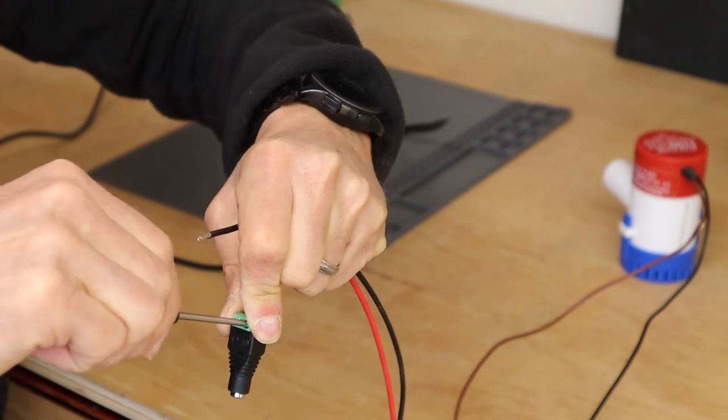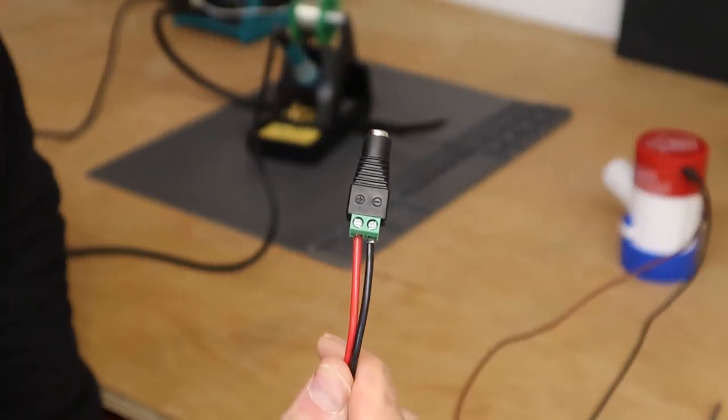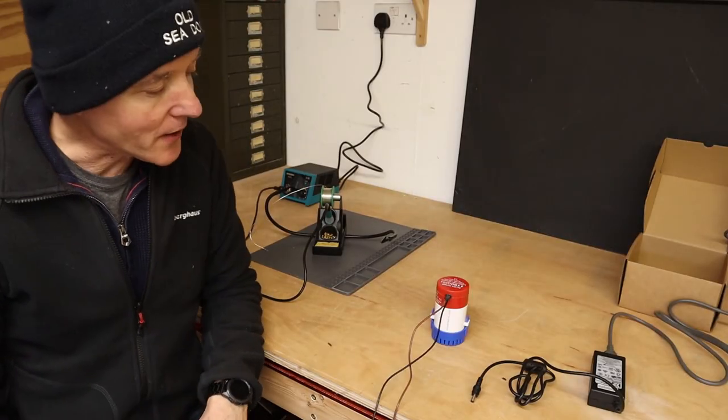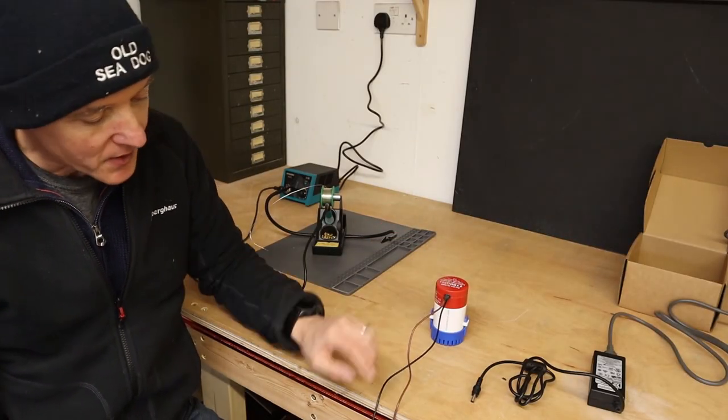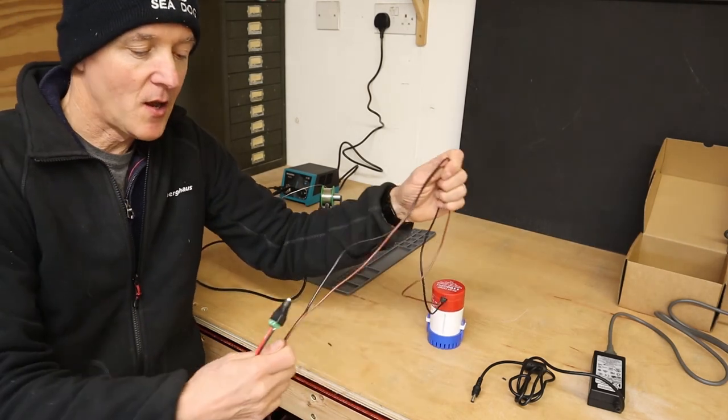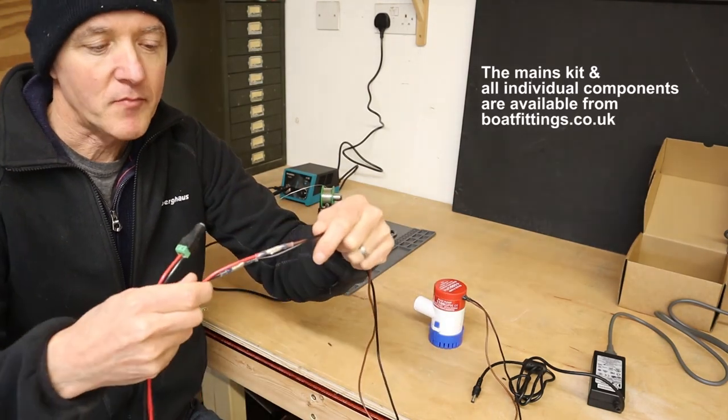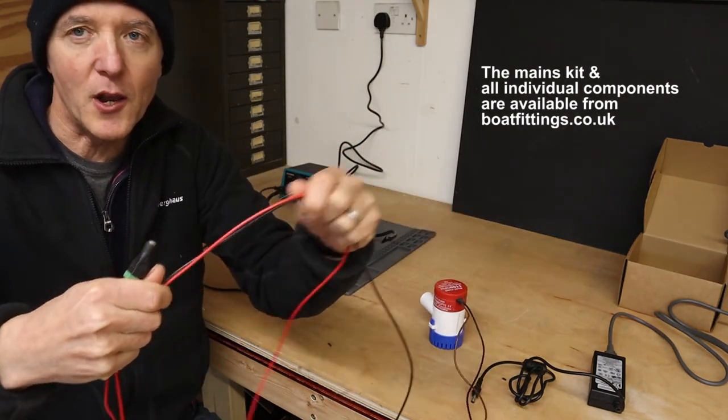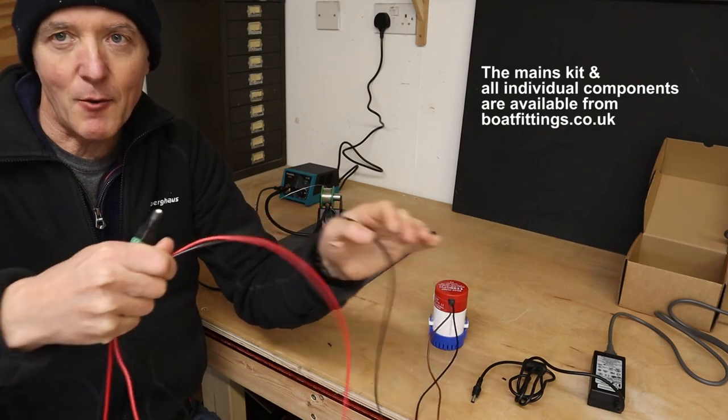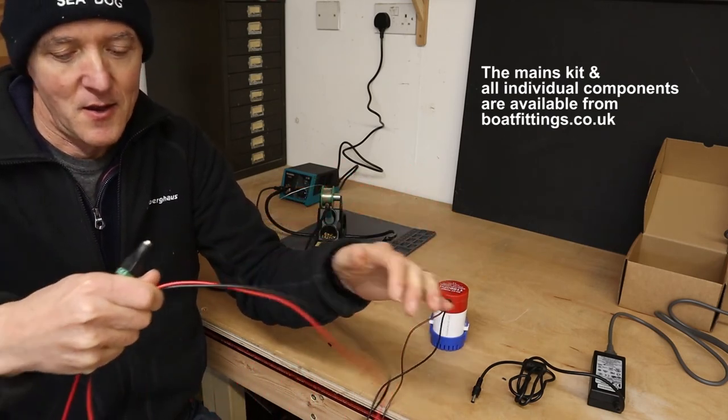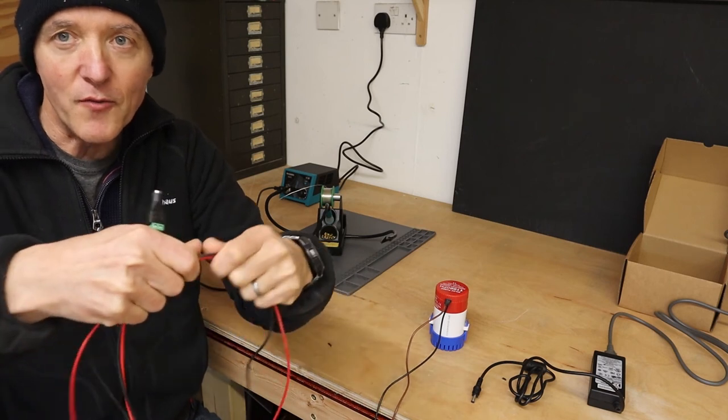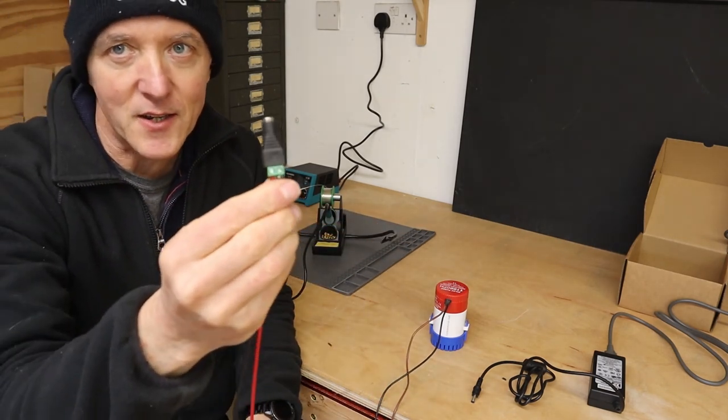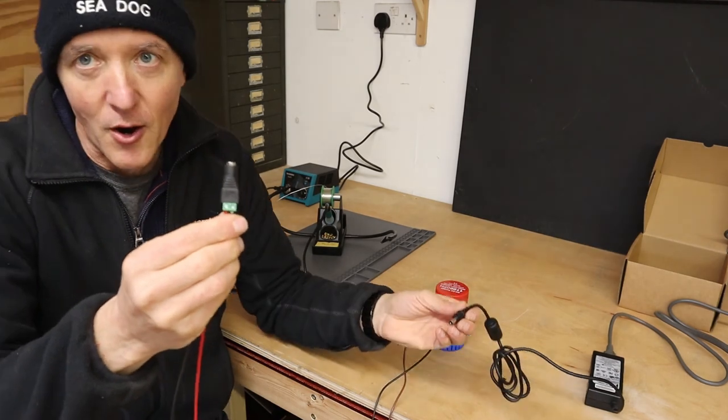Screw that down nice and tight, nice and ready to go. So what we've got after doing that is our bilge pump with its original wires which have now been waterproof connected to our extension wires, and we have got loads of wire to allow us to get well away from the water we're dealing with on the low voltage end of the system, before we have a coax connector which will plug into our mains supply.